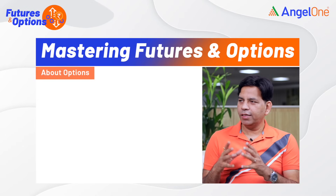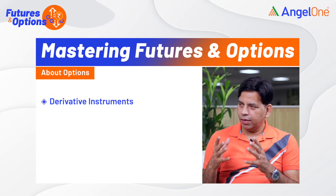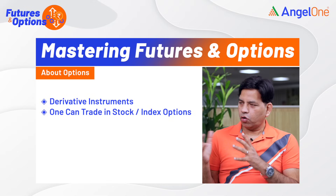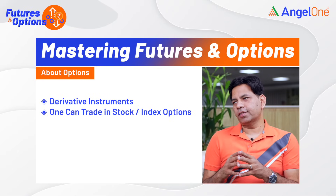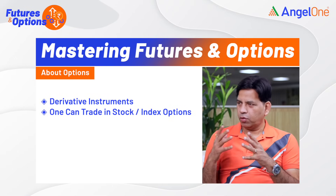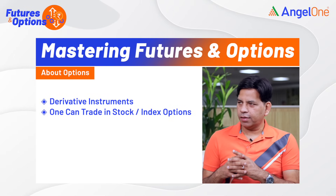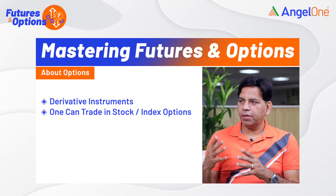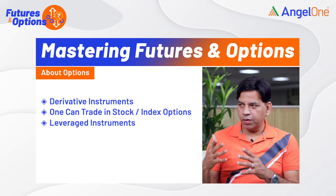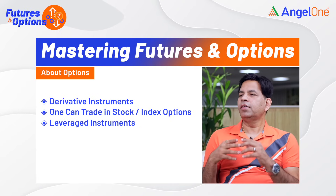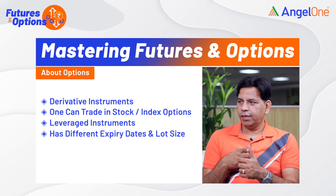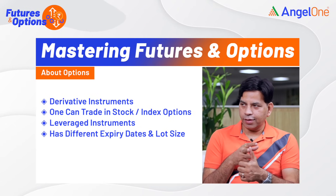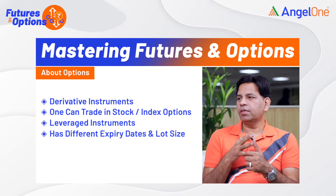Options are basically a derivative instrument, which you can trade with stock options and index options. These are leverage instruments and they have expiry dates. They also have lot sizes — for example, if I talk about Nifty, the lot size is 50.